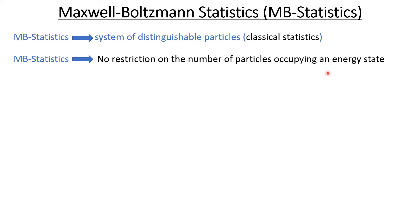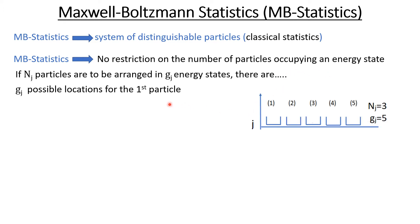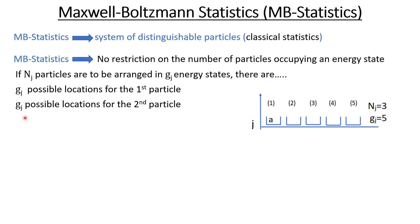For example, if we have to arrange N_j particles in G_j energy states, there would be G_j possible locations for the first particle. For example, if we have three particles and we have to arrange them in five energy states, for the first particle there are five possible locations. Now for the second particle, again I have G_j possible locations because there is no restriction on the number of particles to occupy an energy state, so I can put the second particle here or anywhere in these five energy states.